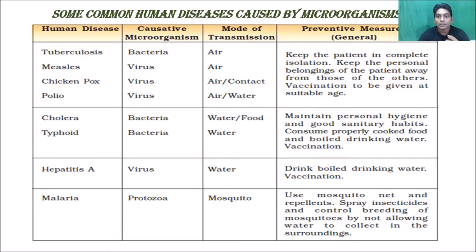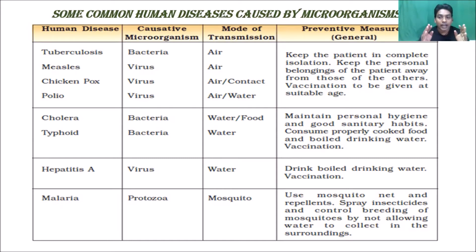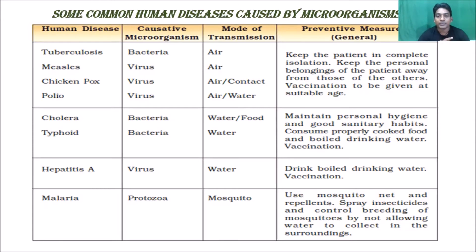For preventive measures, we have to keep the patient in complete isolation and keep the personal belongings of the patient away from others. Vaccination is to be given at a suitable age. We must not touch the clothes or personal belongings of anyone infected with tuberculosis, measles, chickenpox, or polio. Proper vaccination and medication are very important for recovery.